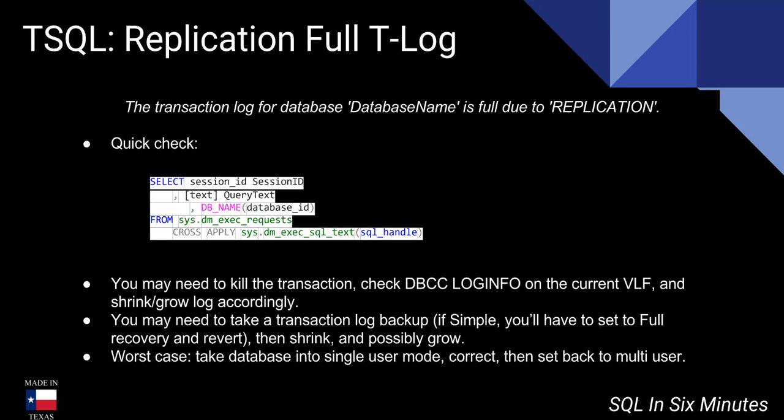Do a quick check on the transactions that are currently running. If something is suspended but still running, go ahead and kill it. Then get the log info on the current VLF and shrink and grow accordingly.